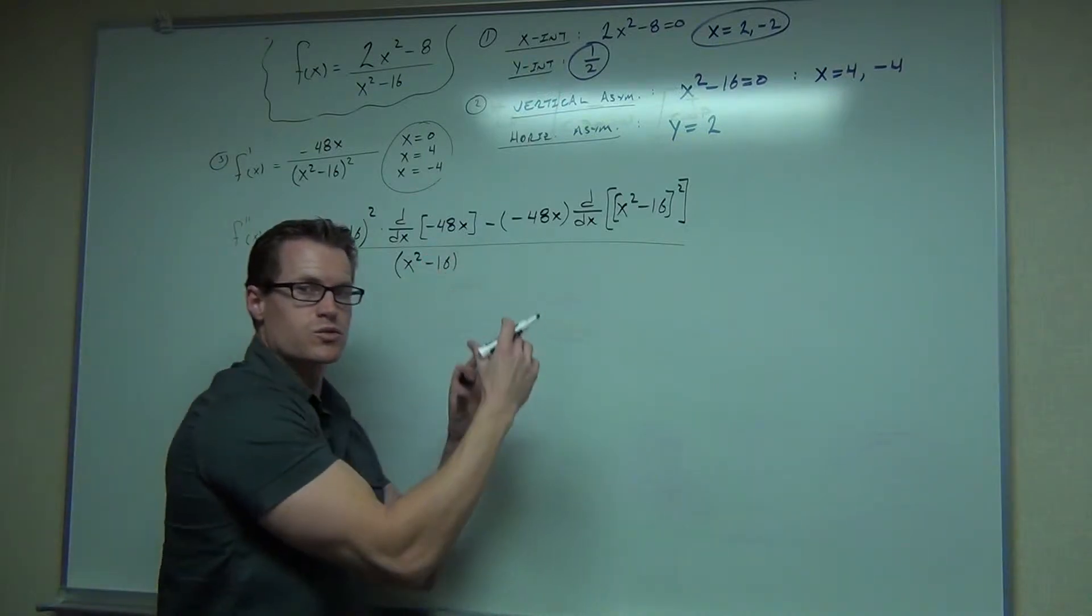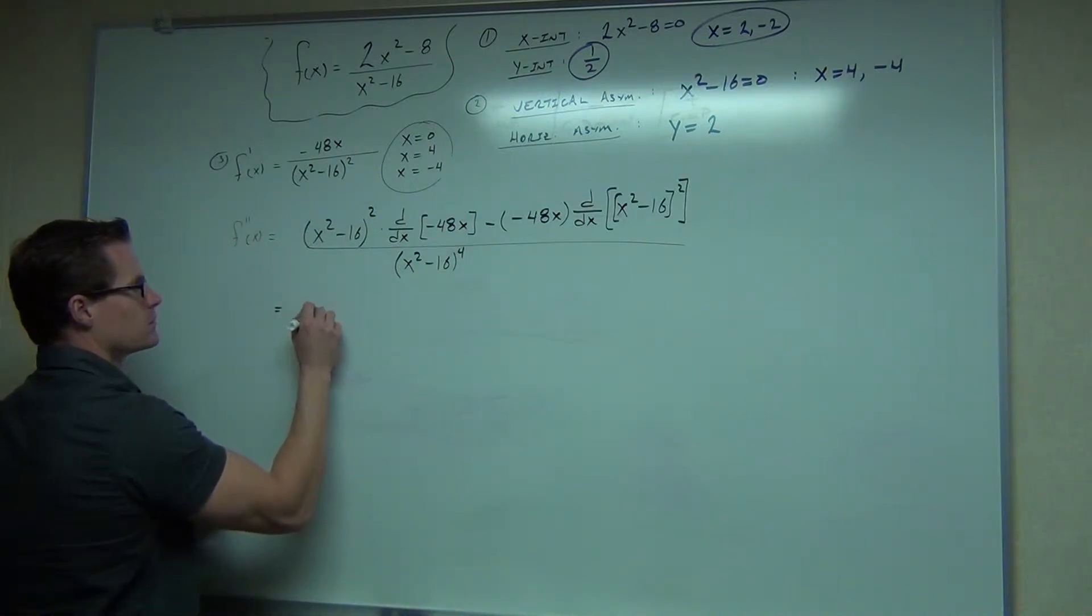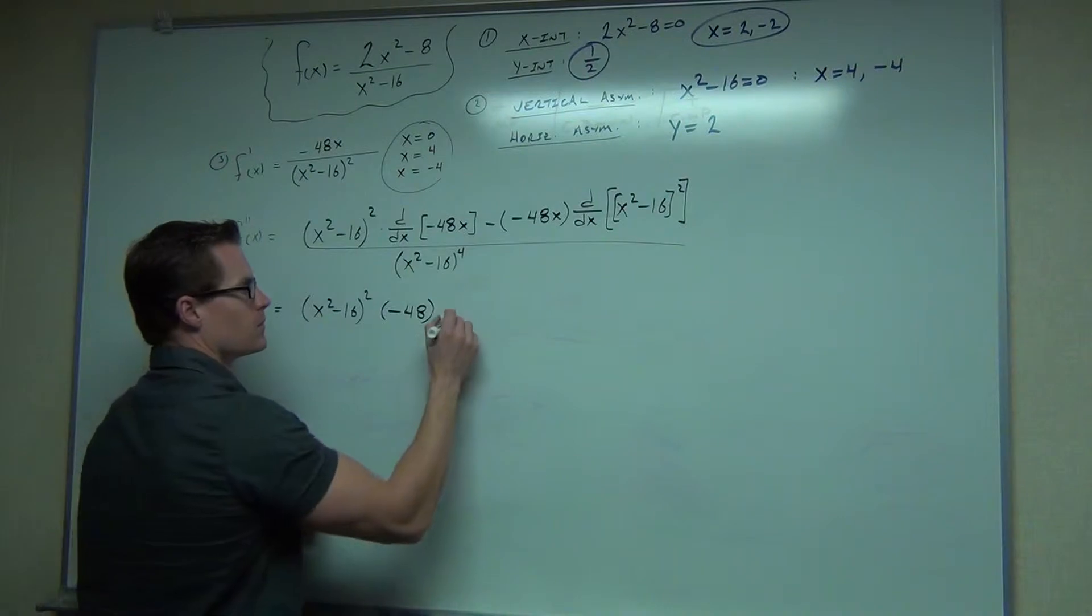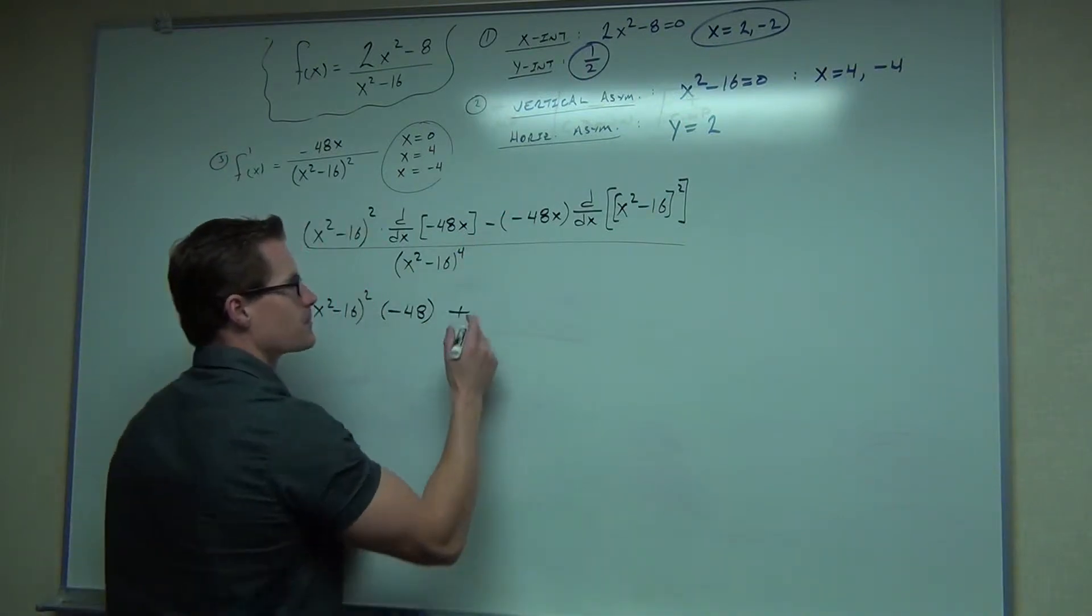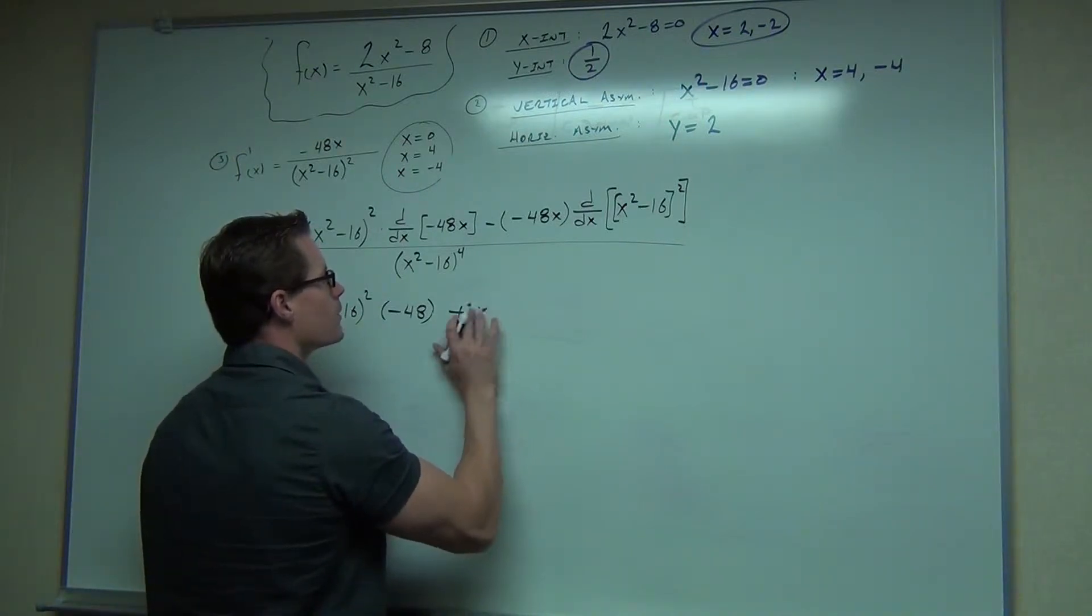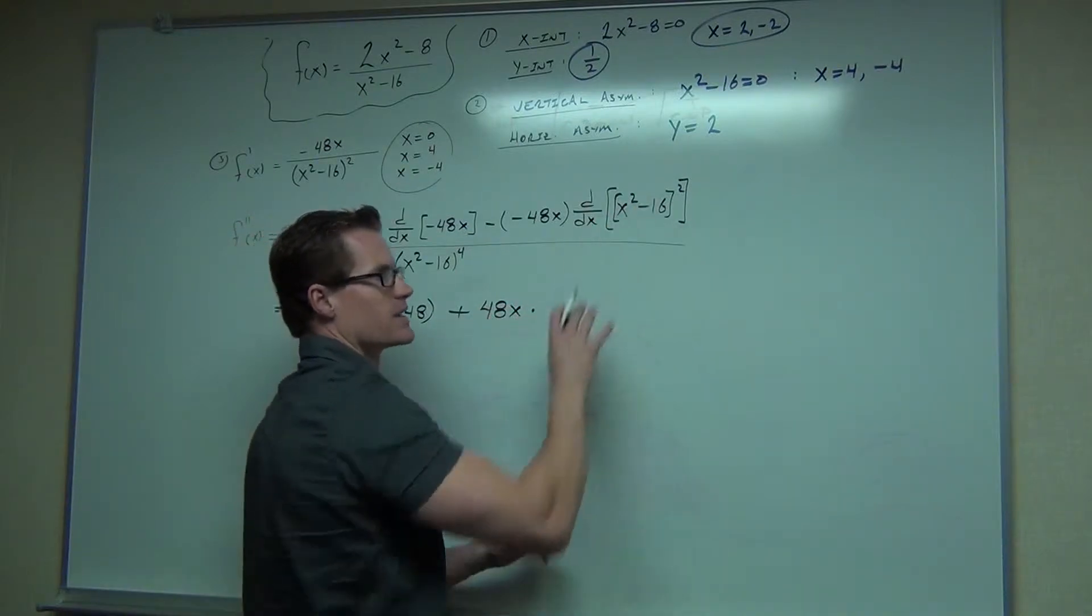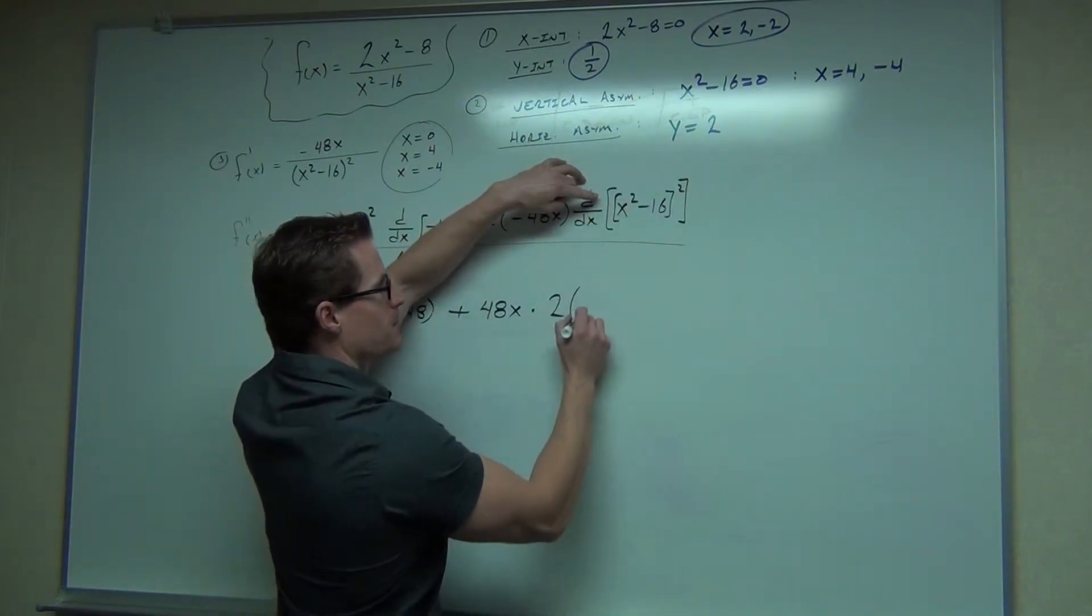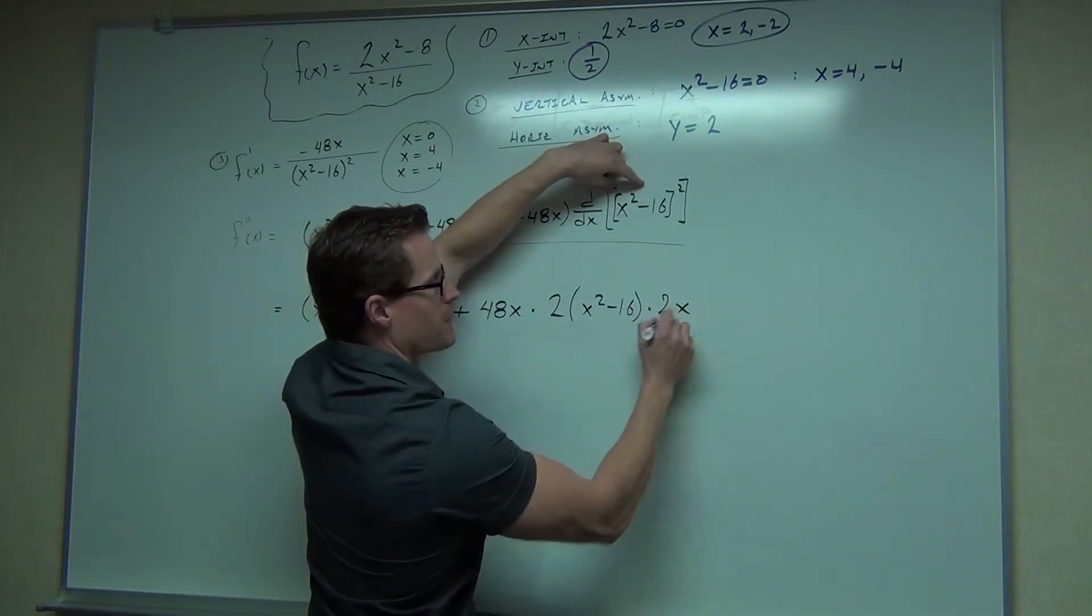This is going to be the fourth power since we're squaring that square. Notice the plus. I'll change it right now. I'll just make a negative, negative into a plus. Also, I'm going to take a shortcut here. I know I tell you not to do this, but we're going to take a general power rule times the derivative of the inside, and that should be our derivative.